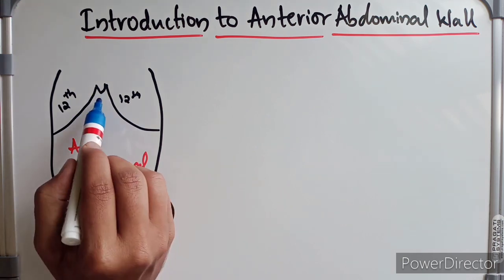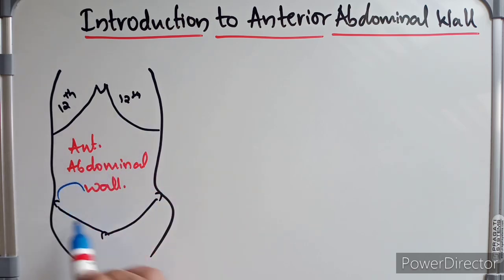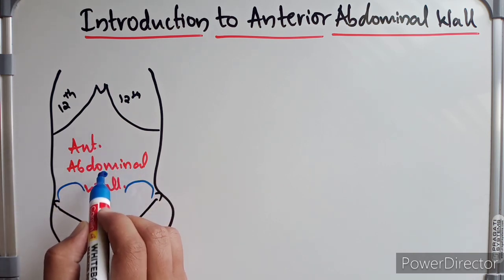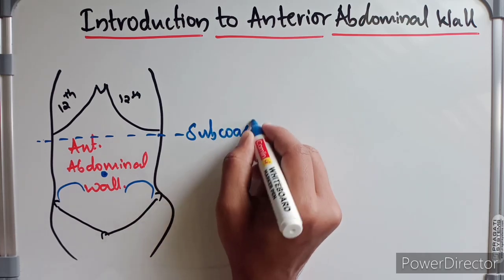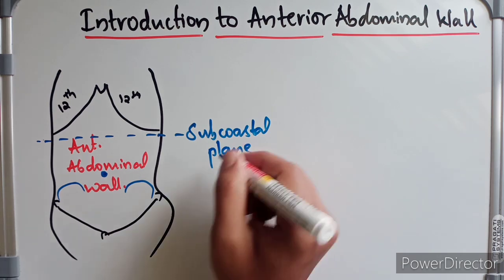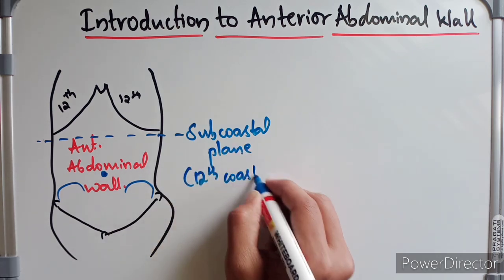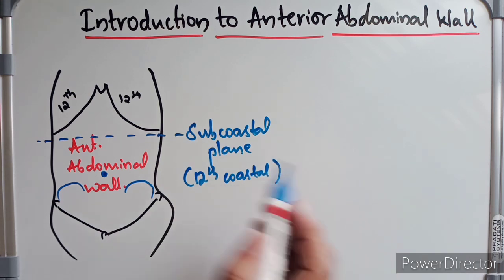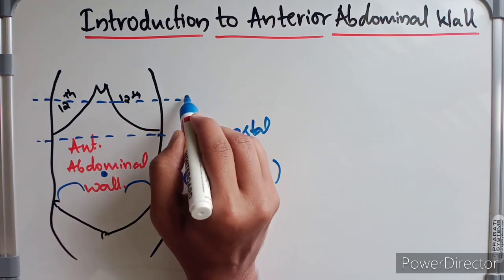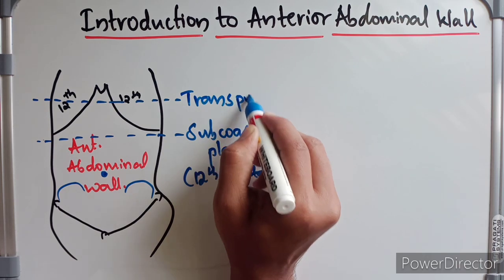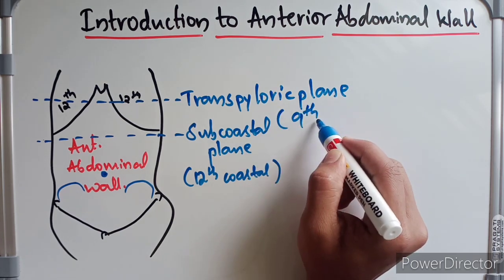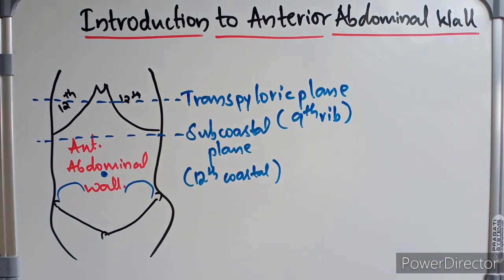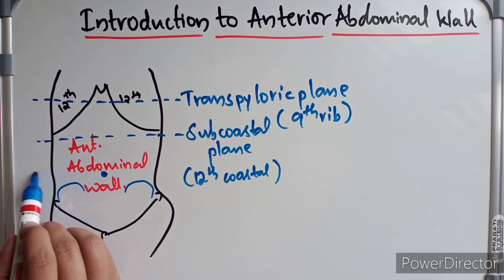Coming to surface landmarks: we have the xiphoid process, the costal margin, the hip, and the umbilicus. Just above the umbilicus is the sub-costal plane, which passes through the inferior edge of the 10th costal cartilage. We also have the transpyloric plane, which is a horizontal plane passing through the ninth costal rib.